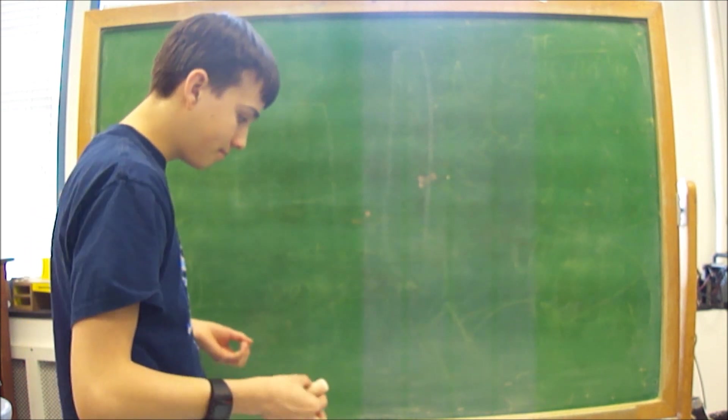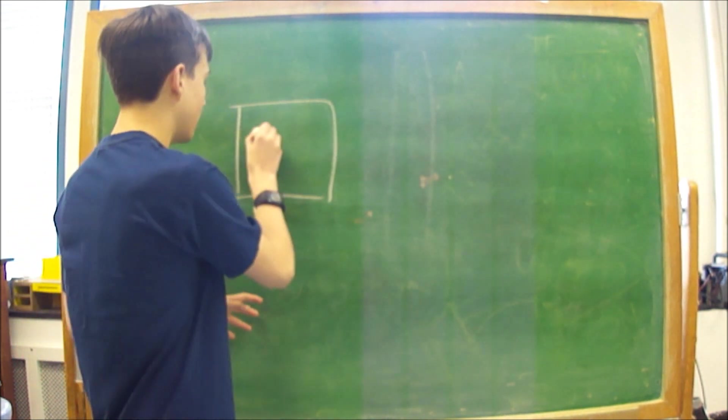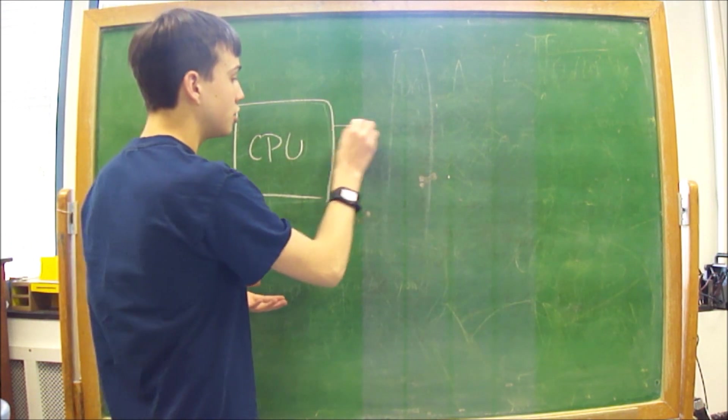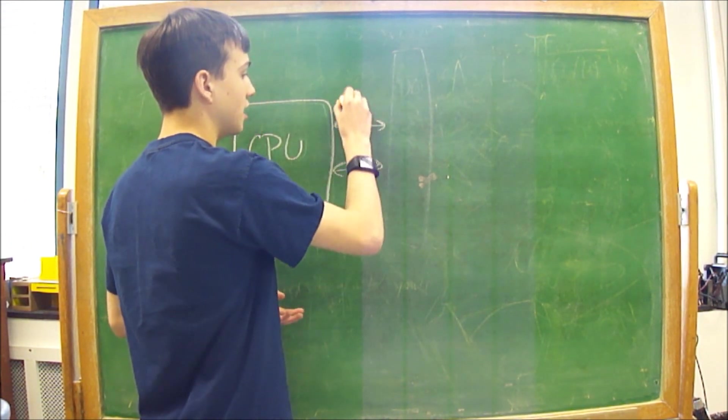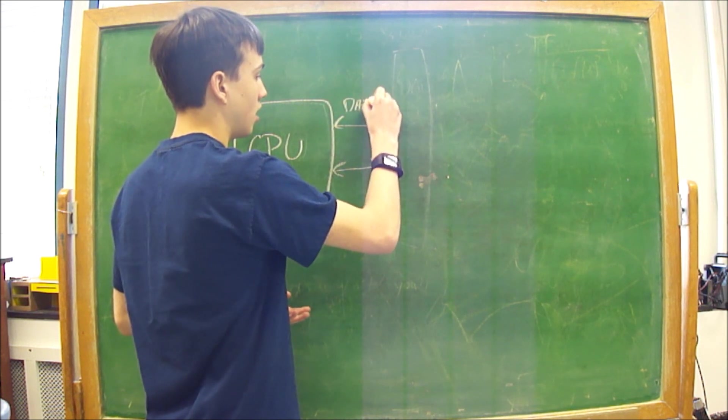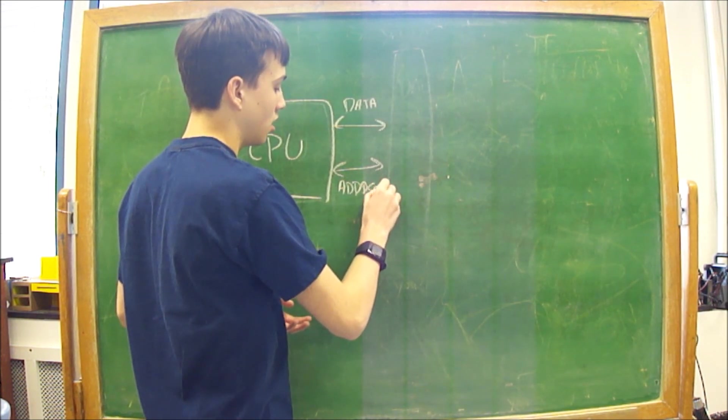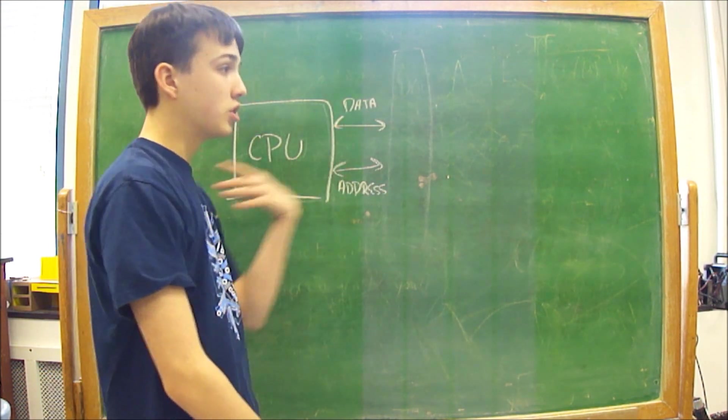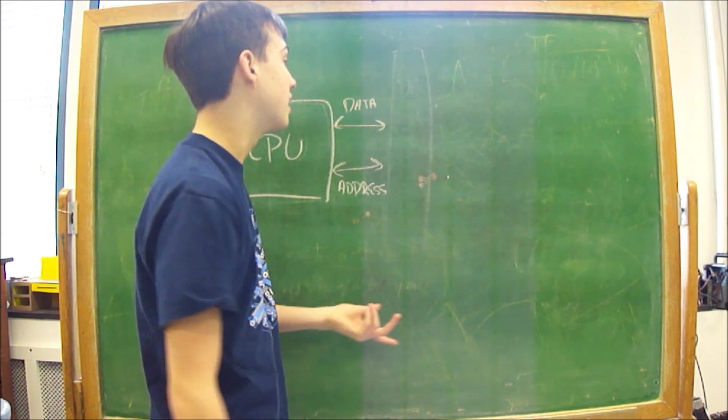Okay, so a computer is basically, I'm being very rough about this, it's a CPU, that's your central processing unit, and it has two data buses on it. You've got the data bus and the address bus. So data is what the CPU goes out and gets, and is returned to, and the address is where it goes to get that data.